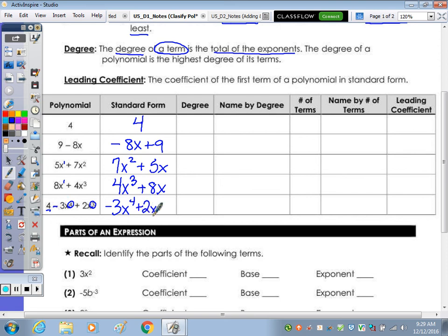Now the degree, as we mentioned, the degree of a term is the total of the exponents. And the degree of a polynomial is the highest degree of its terms. Our degree here is 0, as we have no exponents. And as I mentioned, you can think of this as x to the 0.